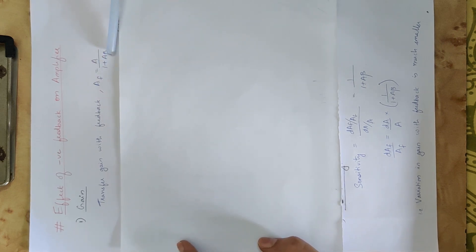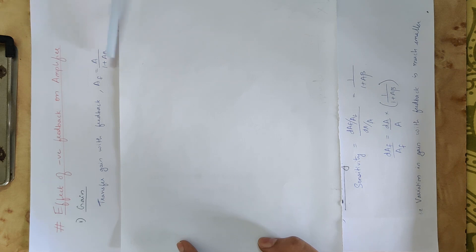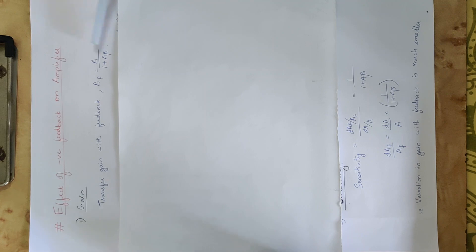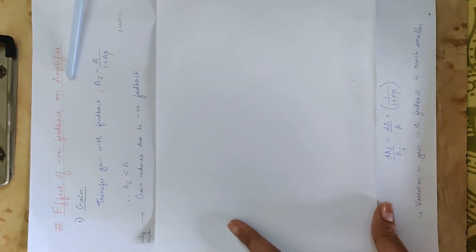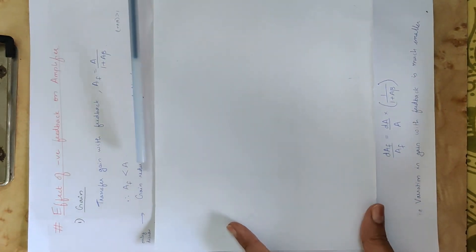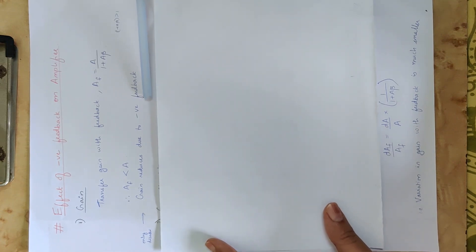Check here — the denominator, 1 plus A beta, is greater than 1. Therefore, the AF value is less than A. Gain reduces due to negative feedback.